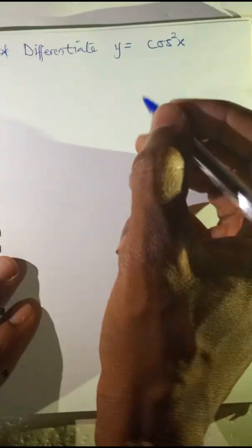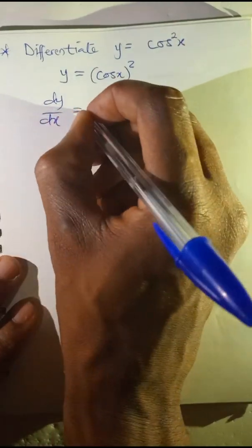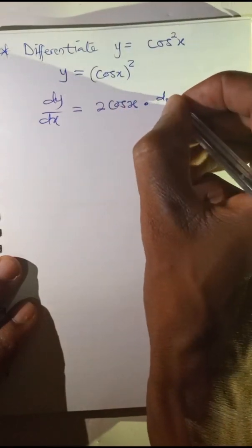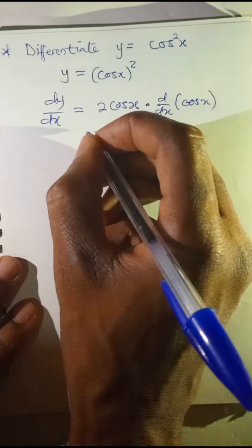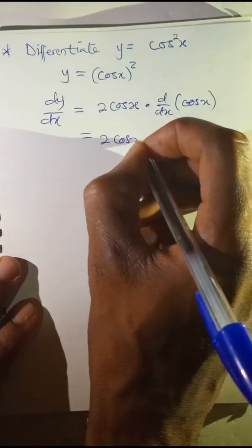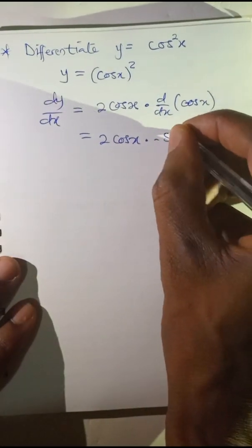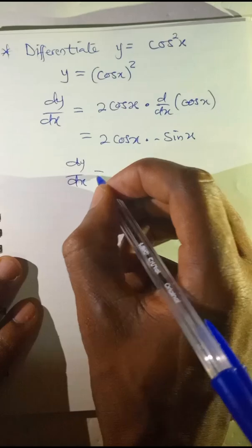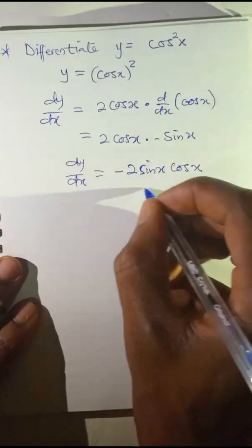Differentiate y equals cos squared x, written as cos x raised to the power of 2. Therefore dy/dx equals: drop down the exponent 2, multiply by cos x, then times the derivative of cos x, which is minus sine x. Altogether, dy/dx is equal to minus 2 sin x cos x. This is the derivative of cos squared x.